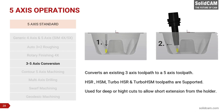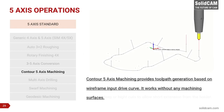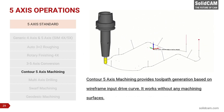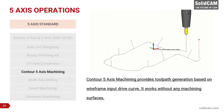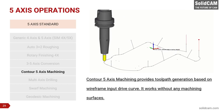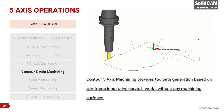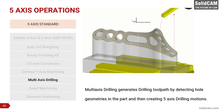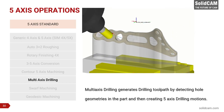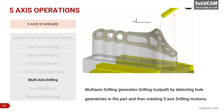3-to-5-axis conversion converts existing 3-axis toolpaths to 5-axis toolpaths, keeping the tool extension short when machining tall or deep shapes. The holder is always checked against the material and will tilt its vector to avoid gouging into the workpiece. Contour 5-axis machining provides toolpath generation based on wireframe input and works without the need to define any machining surfaces. SolidCAM has a specialized edge trimming operation, though contour 5-axis can accomplish a similar result.